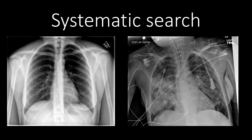A systematic search is important to employ for every radiograph you read. By being systematic and looking at each element of the radiograph, you're much less likely to miss an important finding. This is key when you are looking at what appears to be a normal radiograph, like we see on the left, or in an obviously abnormal radiograph, like we have on the right. In both cases, looking at each element of the chest in the same order for every patient has been shown to reduce the likelihood that you miss an important finding.